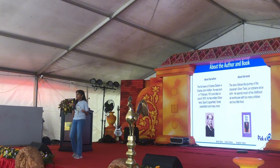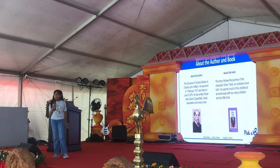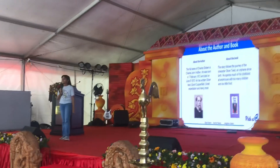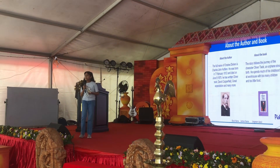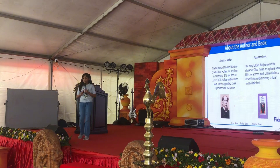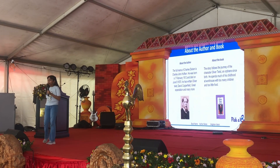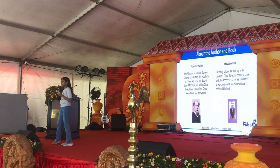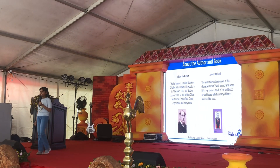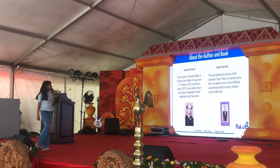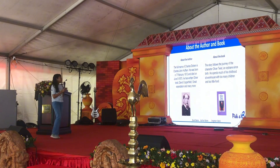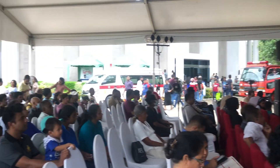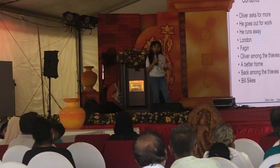Let me tell you a little about the book and author. The full name of Charles Dickens is Charles John Huffham. He was born on 7 February 1812, and he died on June 9, 1870. He has written Oliver Twist, Great Expectations, David Copperfield, and many more. Oliver was an orphan since birth and spends much of his childhood in the workhouse.